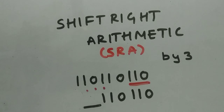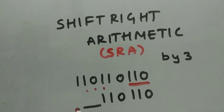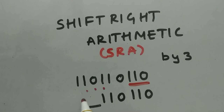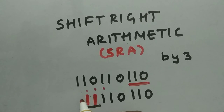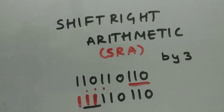We sign-extend the result: we take the MSB sign bit and extend it back into the vacated positions. Here the MSB sign is 1, so the last three bits are filled with 1, 1, and 1. That is the major difference — in logical shift we don't care about the sign, but in arithmetic shift we do.